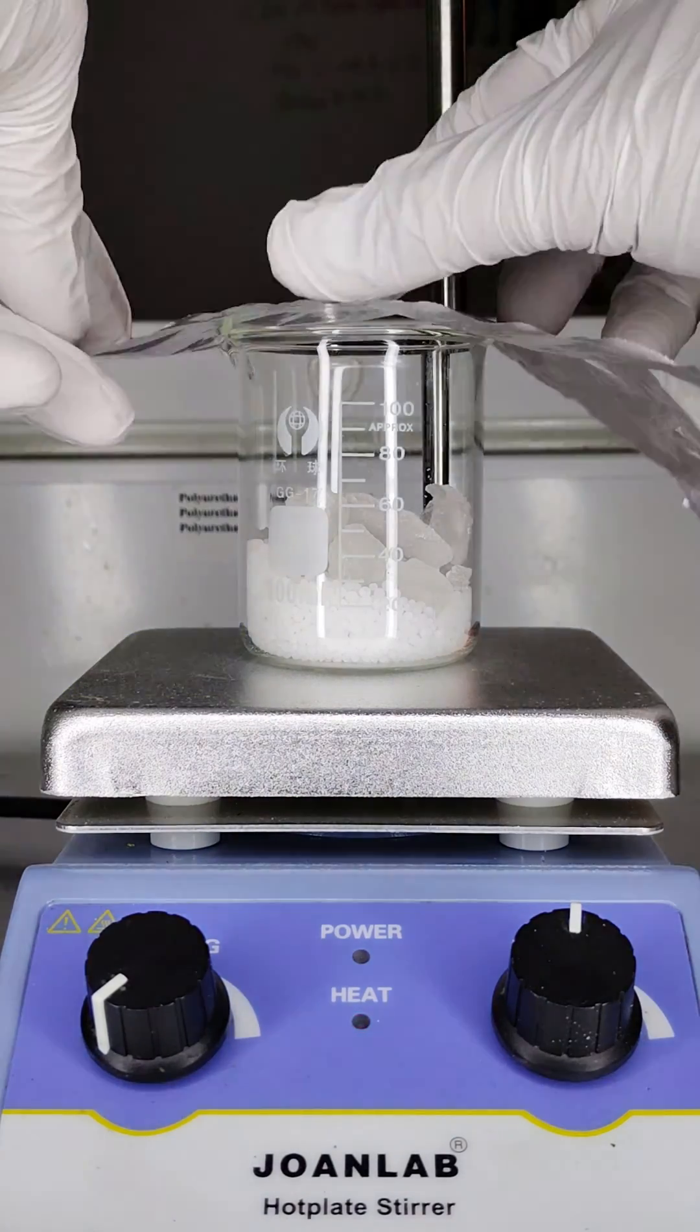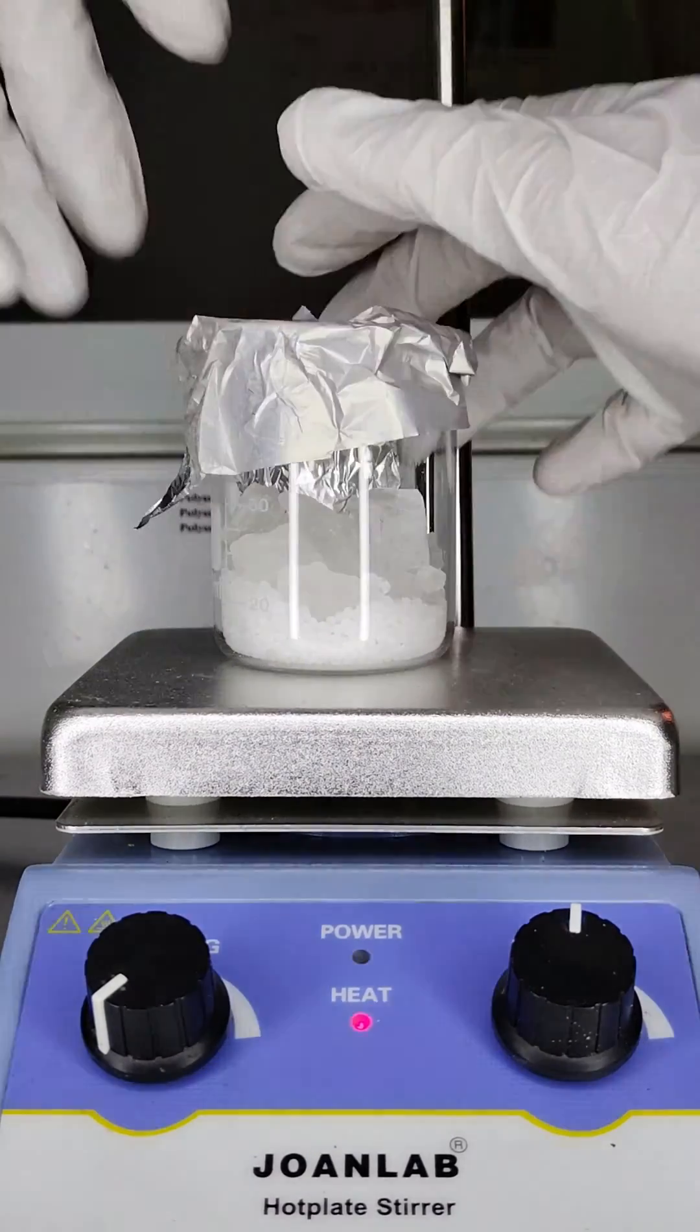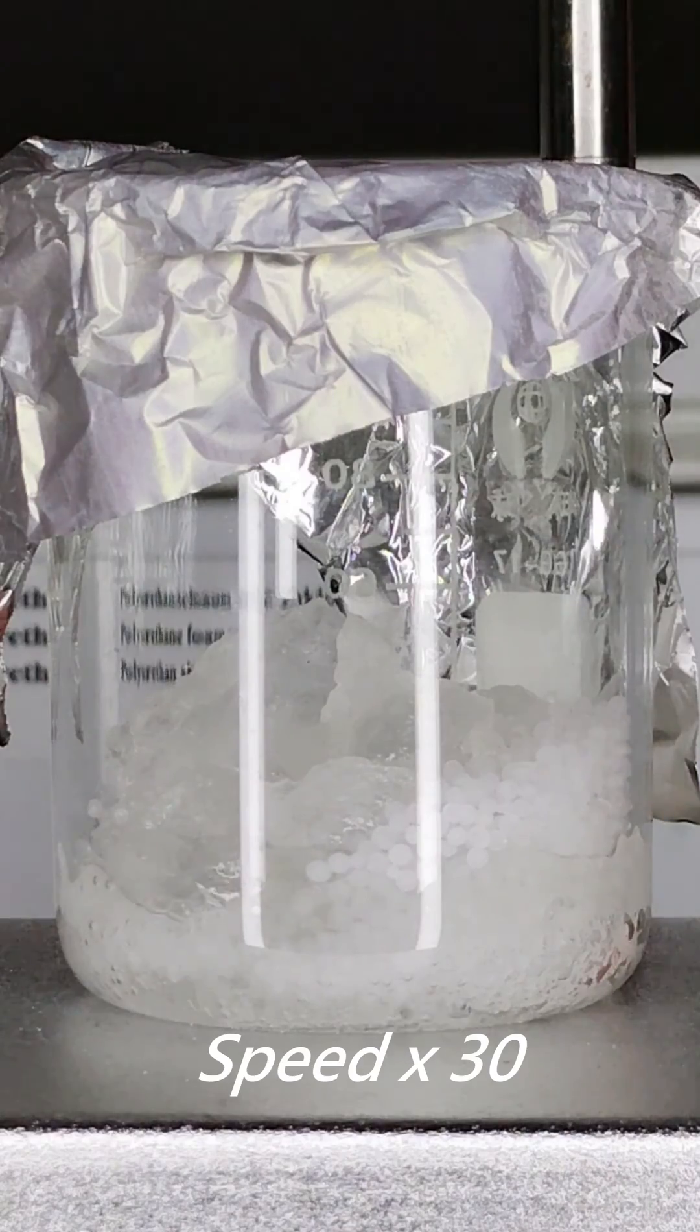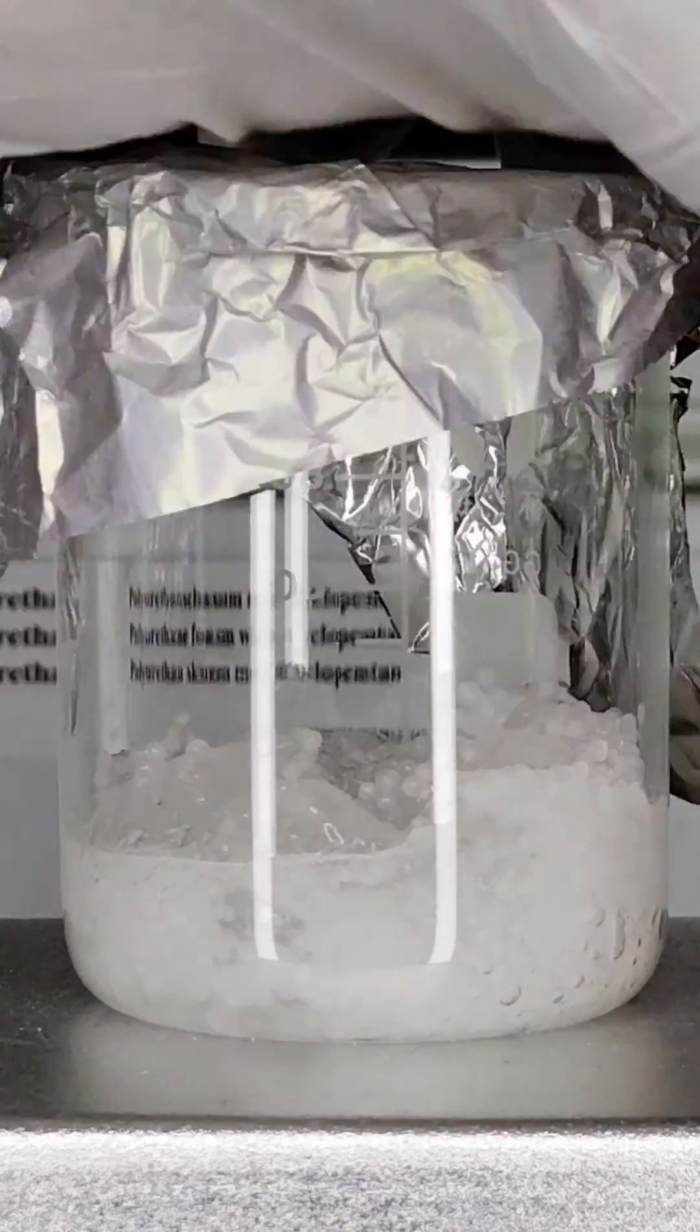Start by preparing a clean glass container. Add the desired aluminum compound, alum, into the container. The choice of aluminum compound depends on your specific requirements.